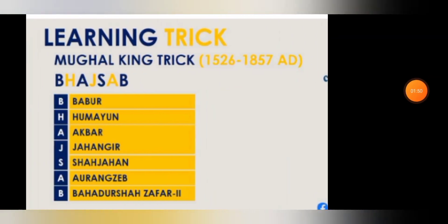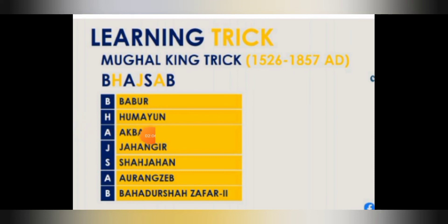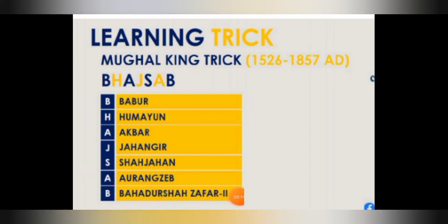B stands for Babur, H stands for Humayun — the second Mughal king. A stands for Akbar, J for Jahangir, S for Shah Jahan, A for Aurangzeb, and the last one P stands for Bahadur Shah Zafar.